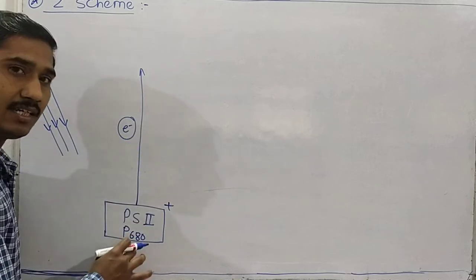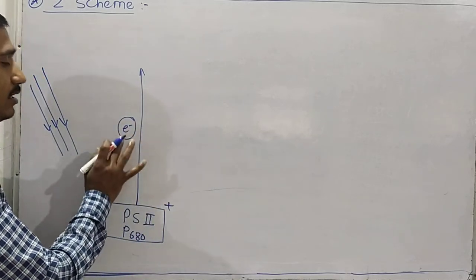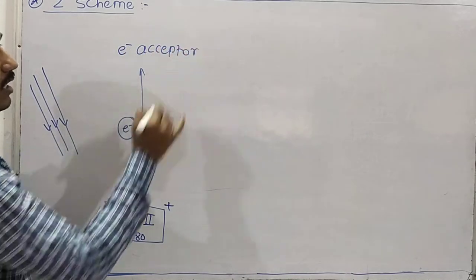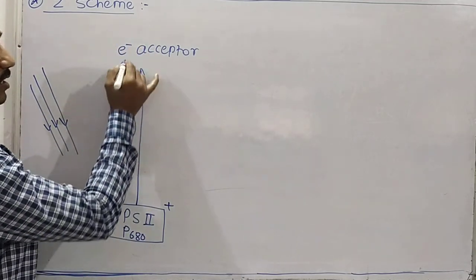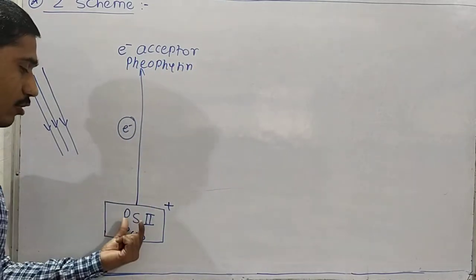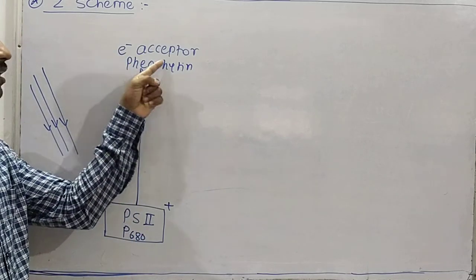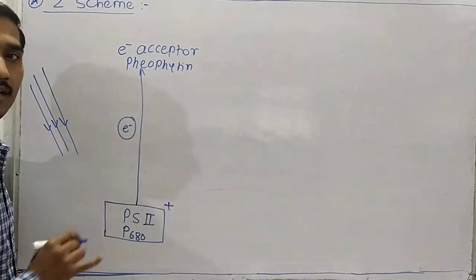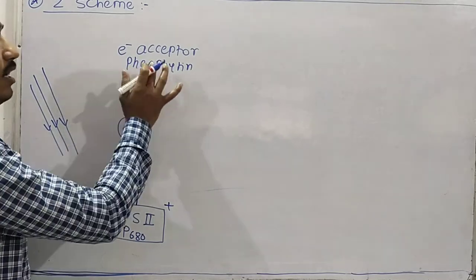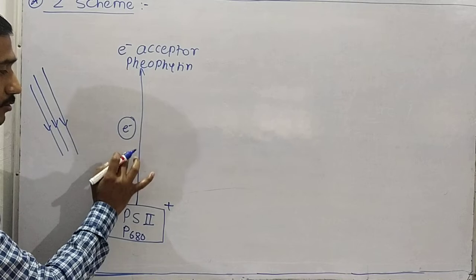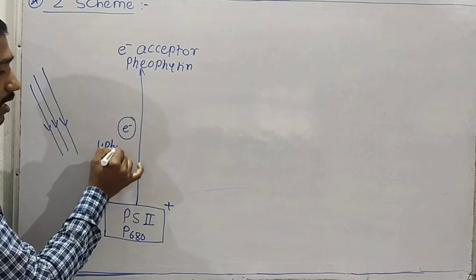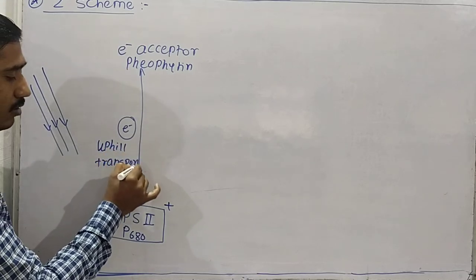The electron repelled from P680 is trapped by the first electron acceptor, which is pheophytin. So when the electron is repelled from PS II, it is accepted by pheophytin. The electron moves in an upward direction — this is called the uphill transport of electrons.